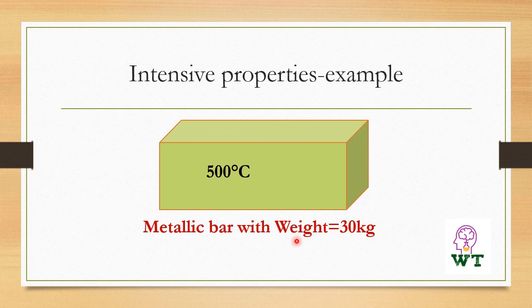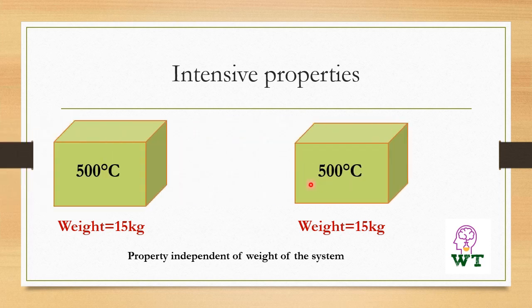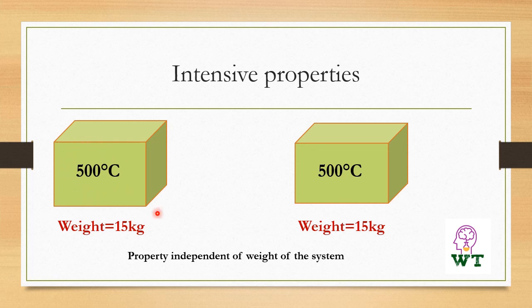For example, a metallic bar with a mass of 30 kilograms has a temperature of 500 degrees centigrade. If we cut this bar into two equal halves — each having 15 kg of weight — even then its temperature does not change at all. This means the property is not dependent on the amount of substance present in the system; therefore, it is independent of the weight. Such properties are called intensive properties.